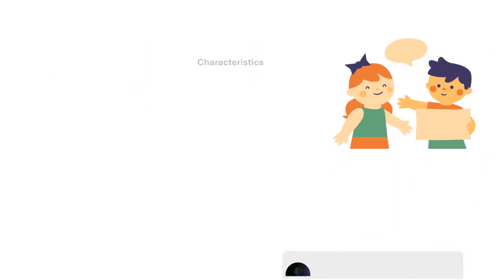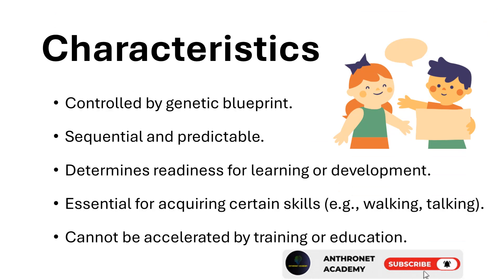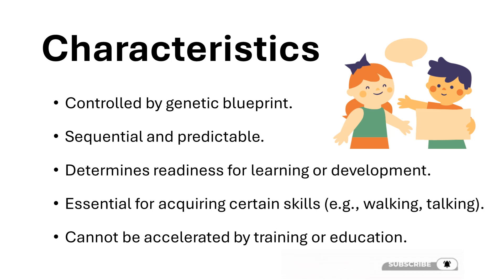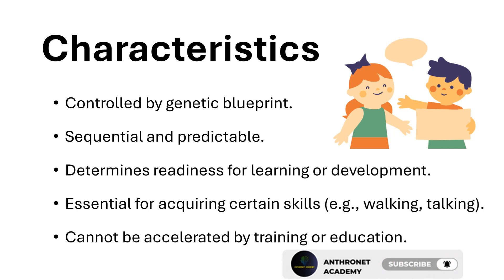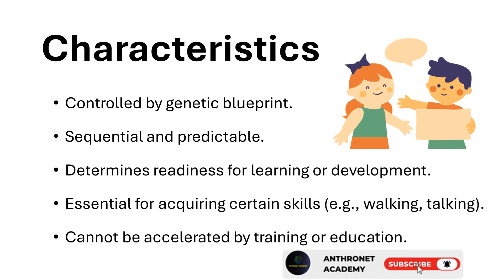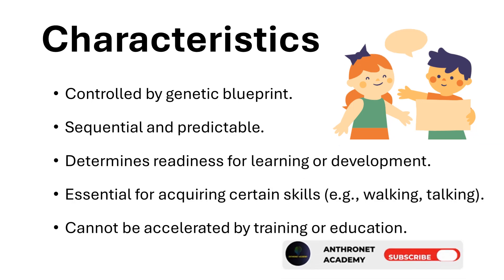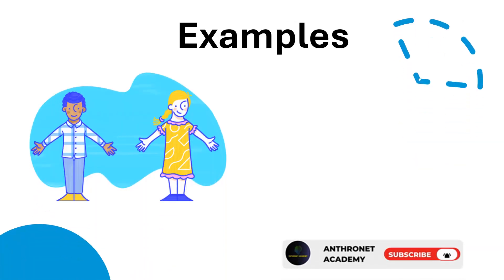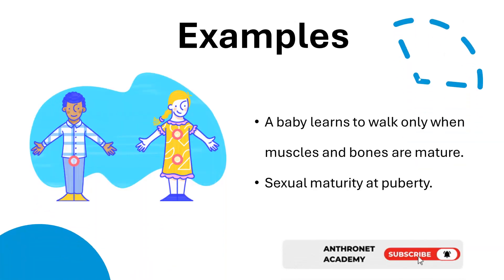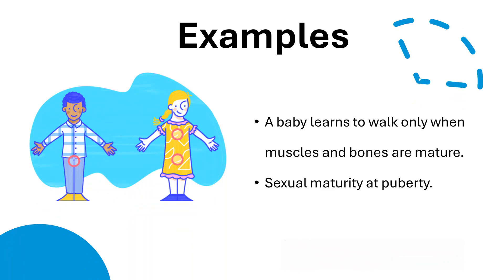Characteristics of maturation: controlled by genetic blueprint; sequential and predictable; determines readiness for learning or development; essential for acquiring certain skills, e.g., walking and talking; cannot be accelerated by training or education. Examples: a baby learns to walk only when muscles and bones are mature; sexual maturity at puberty.